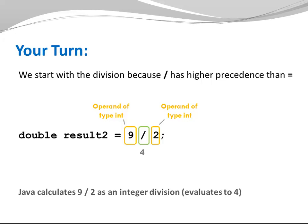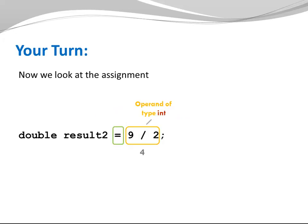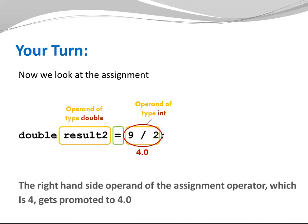Now we look at the assignment. The assignment has a right hand operand of type int, which is 4, and a left hand operand of type double. This doesn't work. Both operands need the same type. So Java is going to promote the right hand operand of the assignment operator from an int to a double. So 4 is converted to 4.0, which is the result at the end.